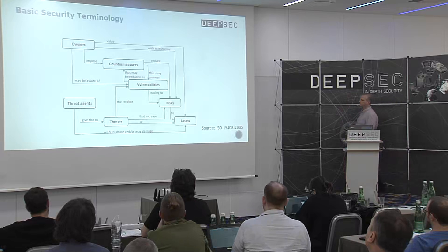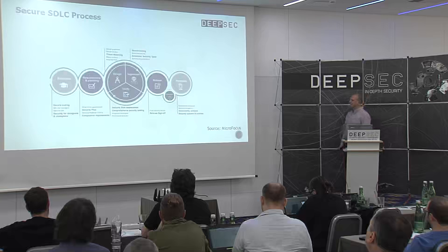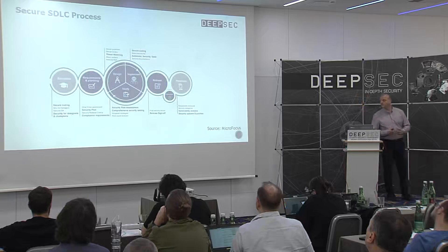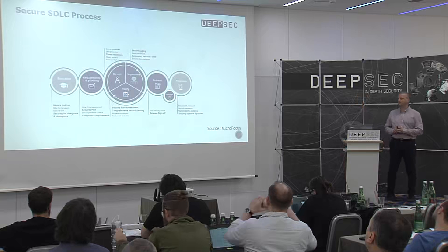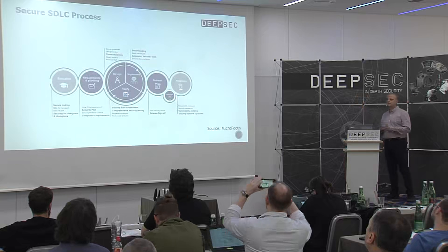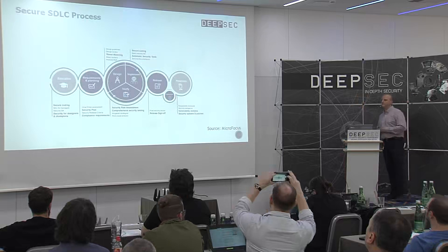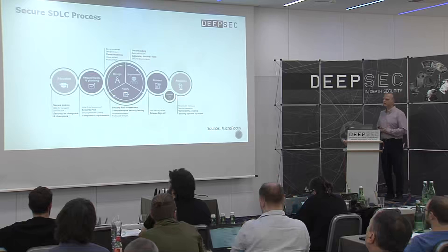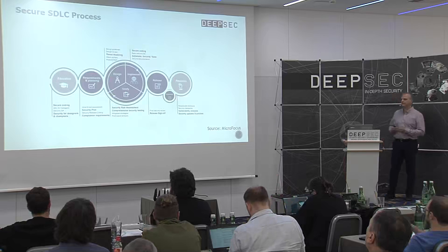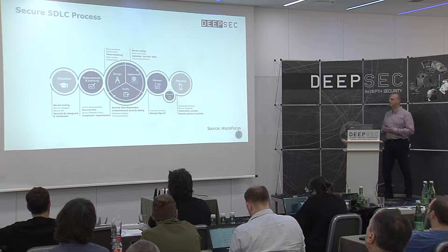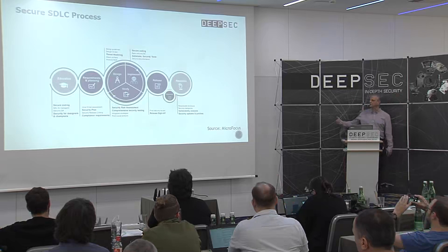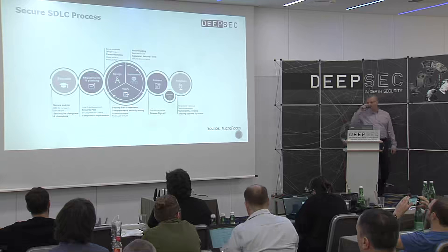Here's a visual representation of this concept. We have the owner — our business. We have the asset, which provides value to our owner. We have threats which might abuse or damage our assets by exploiting vulnerabilities in our software. But we can introduce countermeasures or security controls in order to reduce the risk. Now, back to our presentation. We have a software development lifecycle process — a sequence of steps to produce high-quality software. In most cases, we have design, implementation, verification, and release phases.